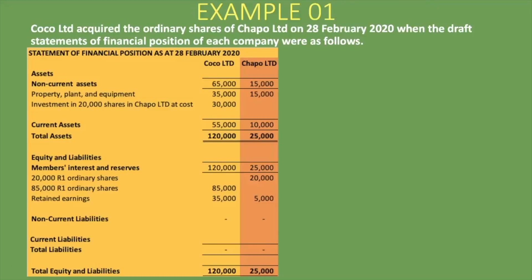We are told that Coco Ltd acquired the ordinary shares of Chapel Ltd on the 28th of February 2020, when the draft statements of financial position of each company were as follows. We are given the statement of financial position for the parent company, which is Coco Ltd — highlighted in yellow — because it acquired Chapel Ltd, which makes Chapel Ltd the subsidiary, shown here in orange.